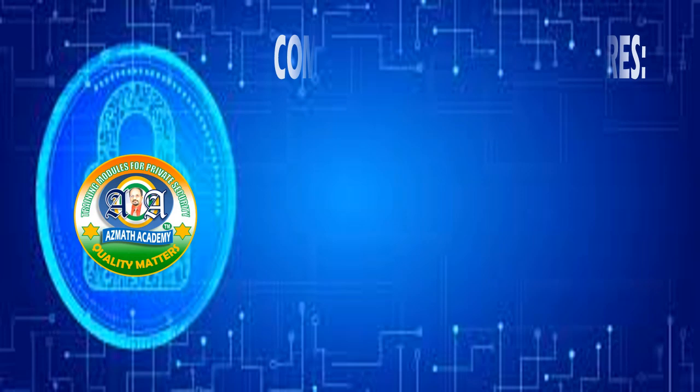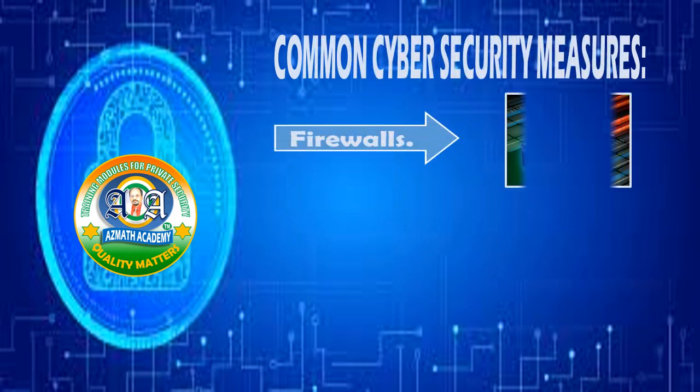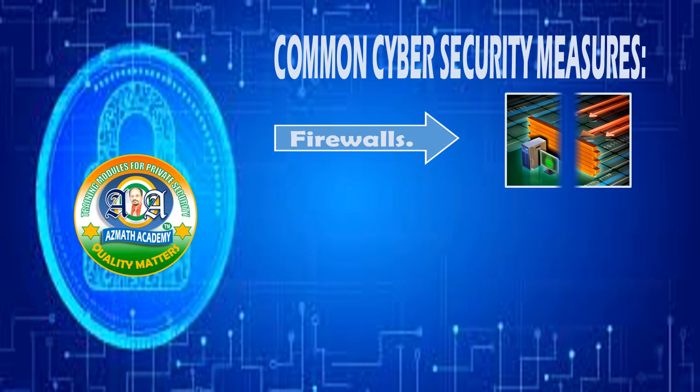Common Cybersecurity Measures. Number 1: Firewalls — act as a barrier between a trusted network and an untrusted one.